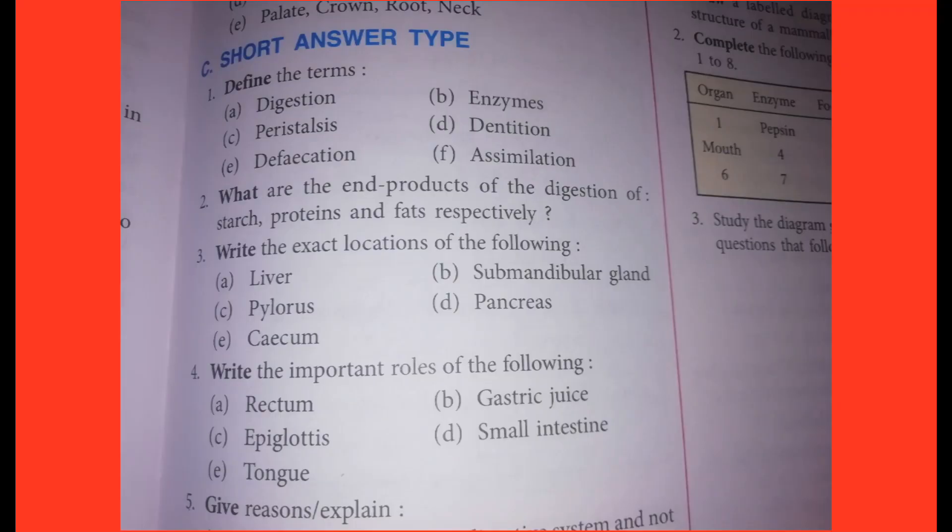Question C, short answer type. First one: Define the following terms. A: Digestion. B: Enzymes. C: Peristalsis. D: Dentition. E: Defecation. F: Assimilation. Answers showing on screen.